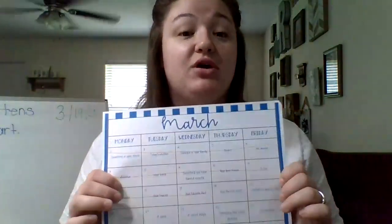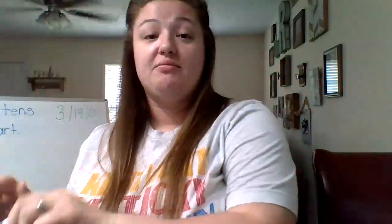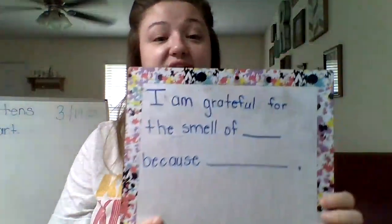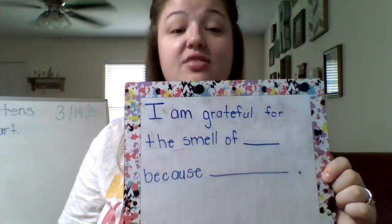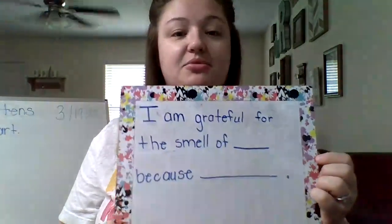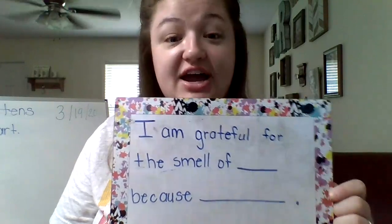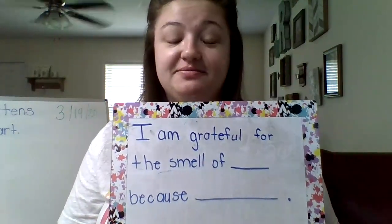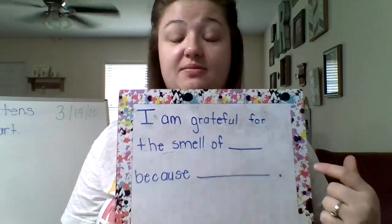I want you to close your eyes and think about what your favorite smell is. Think really hard. Now I've got a sentence starter I want you to use: I am grateful for the smell of blank, because — and then you finish the sentence. Here's my example: I am grateful for the smell of spring flowers because it lets me know that spring is here. So I would write 'spring flowers' and after 'because' I would write 'it lets me know that spring is here.' Once you write this, have your parents send it to me. Tomorrow on my next video I'm going to pick a couple and share them with you guys.